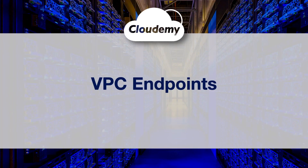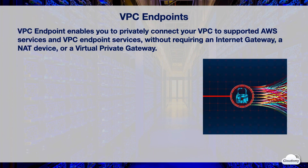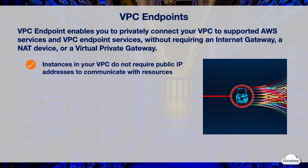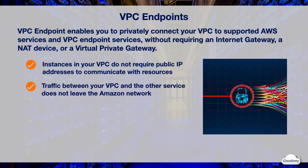Hey guys, welcome back. I'm Jay. In this episode, we're going to look at VPC endpoints. A VPC endpoint enables you to privately connect your VPC to supported AWS services and VPC endpoint services without requiring an internet gateway, a NAT device, or a virtual private gateway. Instances in your VPC do not require public IP addresses to communicate with resources in the service. Traffic between your VPC and the other service does not leave the Amazon network.